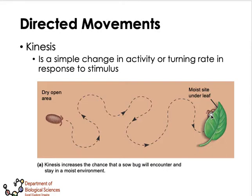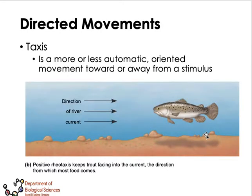That is an example of kinesis — changing activity depending on the stimulus. In a dry environment the bug becomes active, and in a moist environment it becomes less active. We also have what is called taxes.